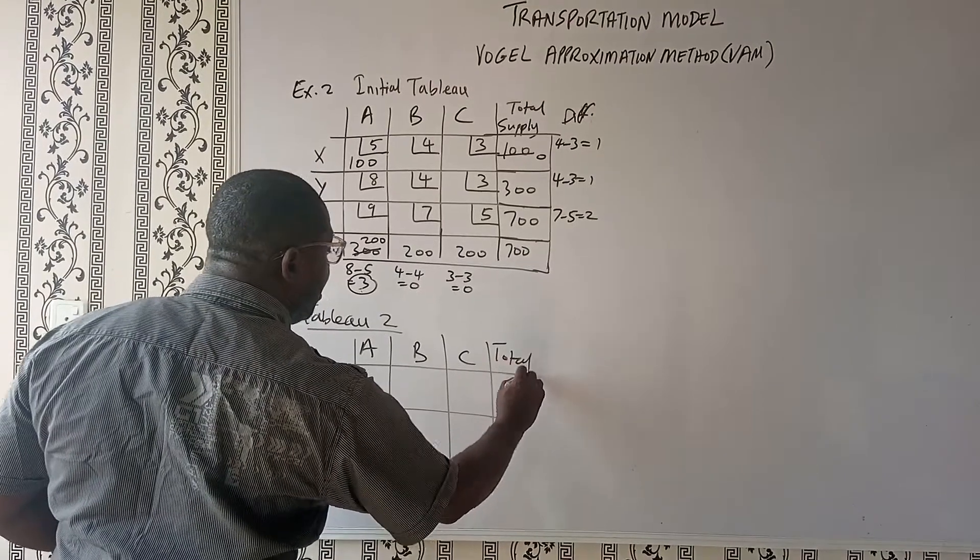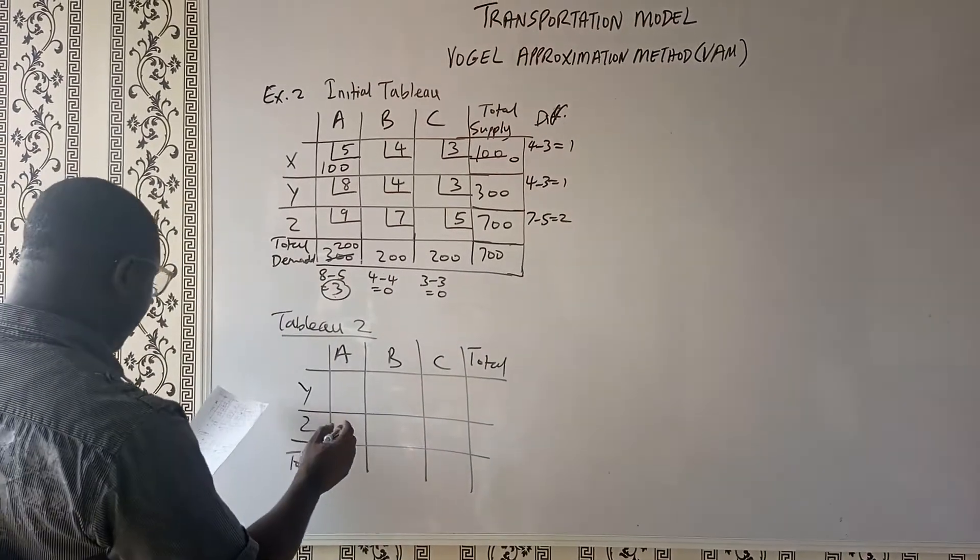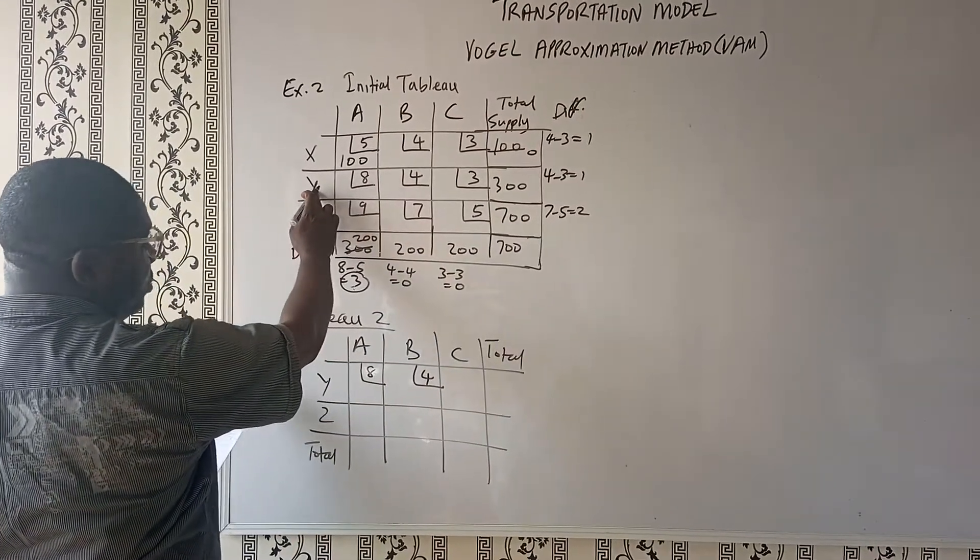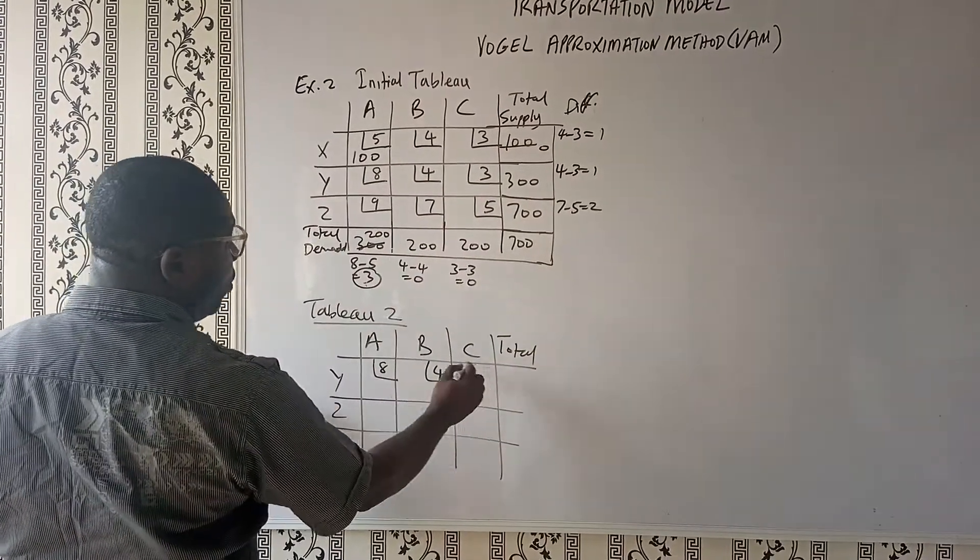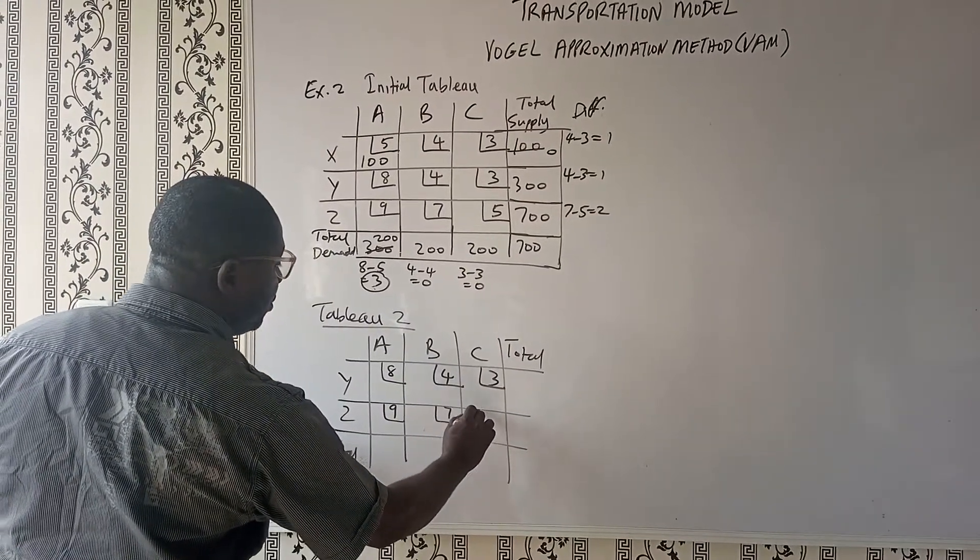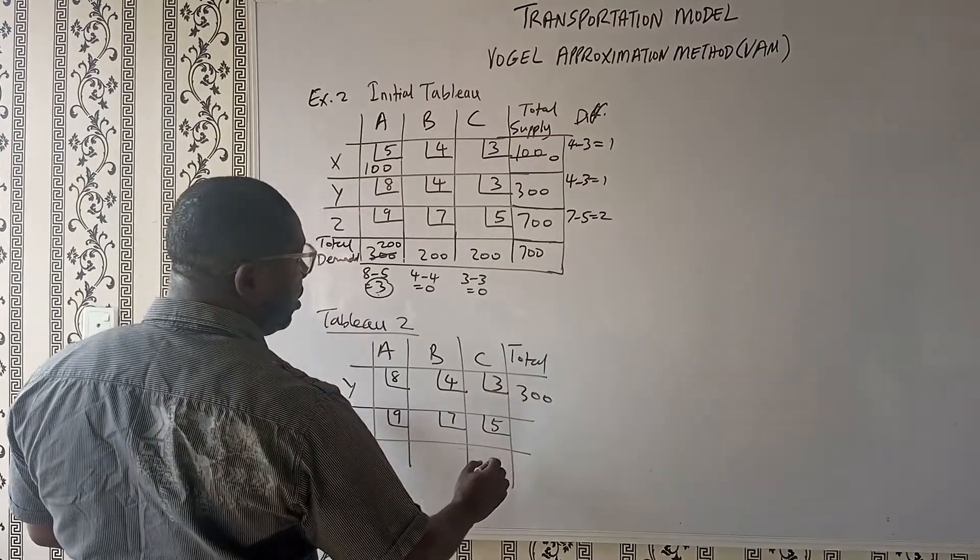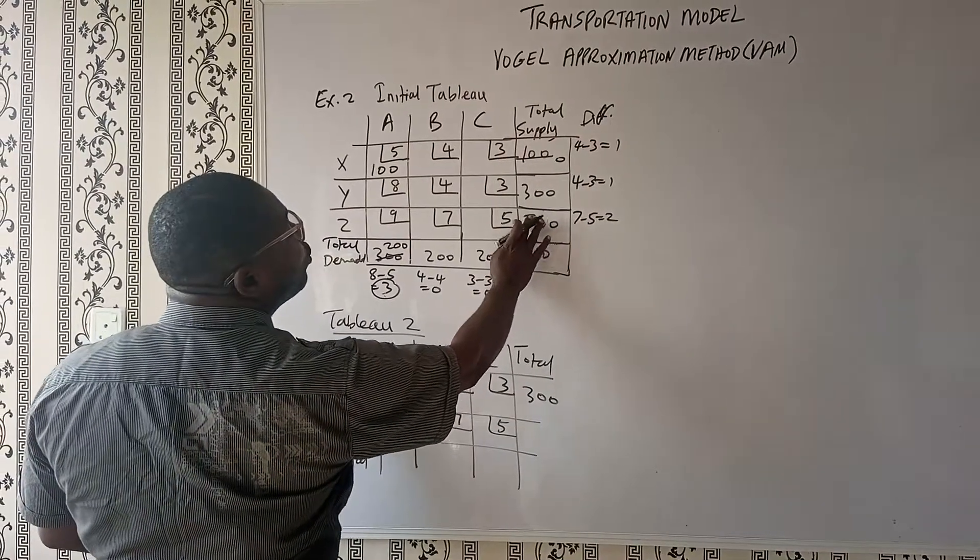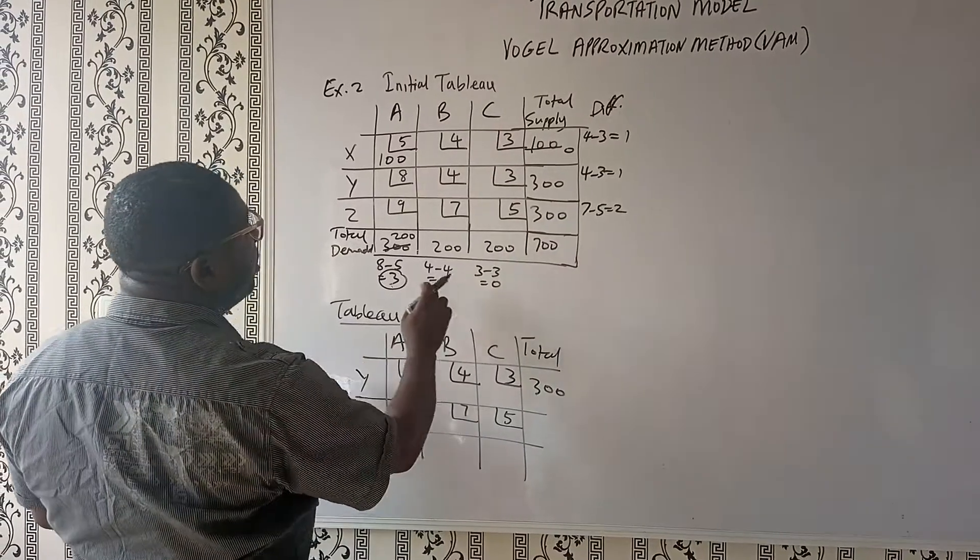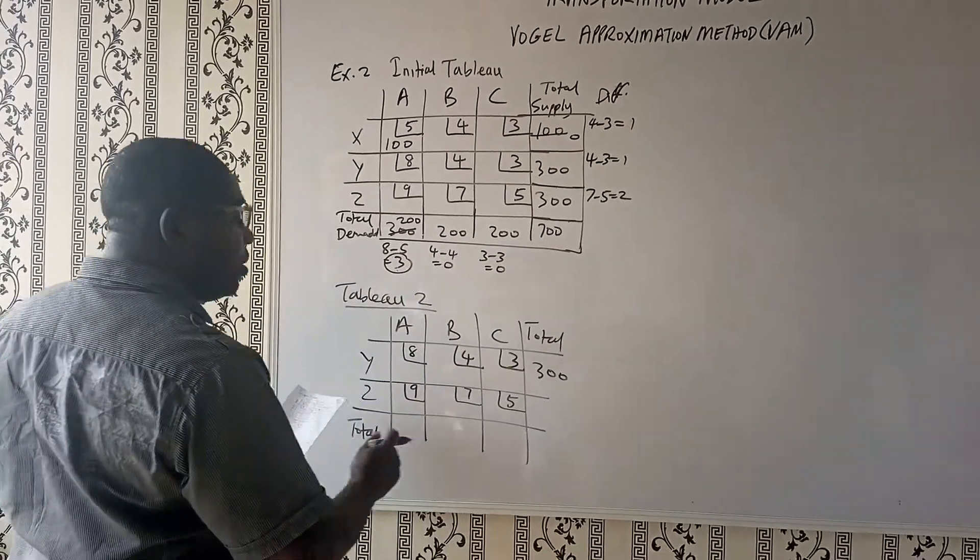We have our total here and we also have our total here. Here we have 8 and then 4. Where are we getting these values from? From here. See our row Y: 8, 4, and 3. And then the next ones are 9, 7, and then 5. Our total will be 300. And here should be 300. So we have 100, 300, 300, so we have 700. 300, 200, 200, 200, so this will be 300.